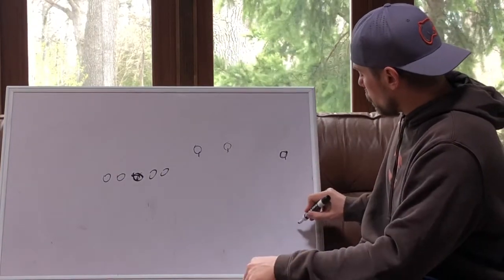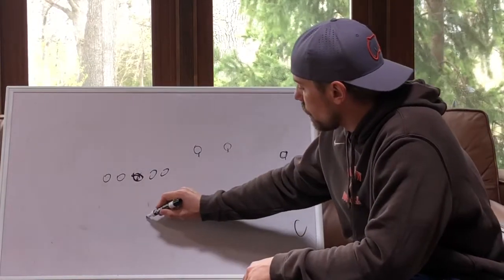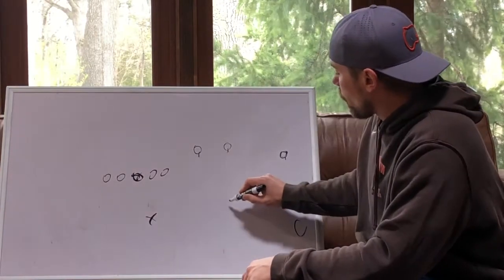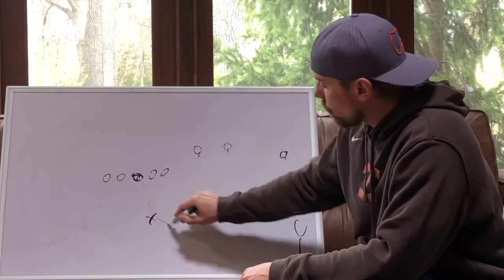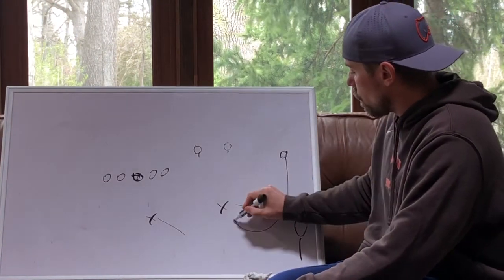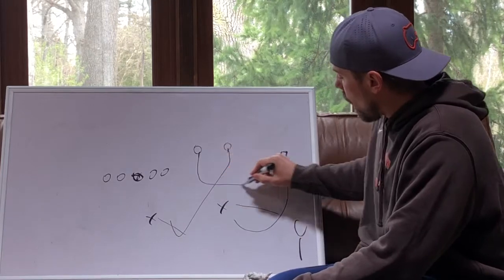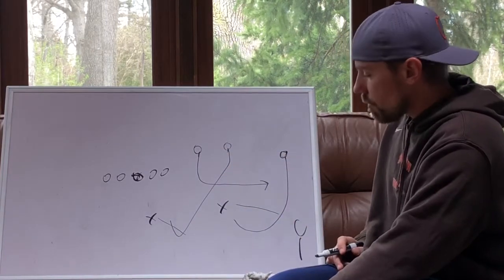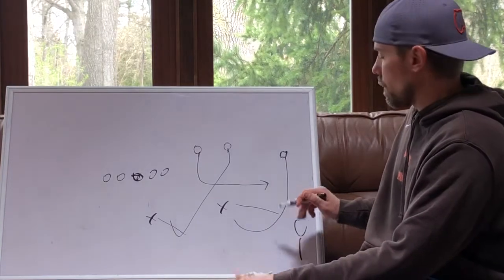And what I mean by that is, let's take that example again. We're playing cover three. So we got a hook curl backer here, we got a flat player here. So we got a deep third, we got a flat, we got a hook drop. So let's run that same concept. Curl, snag, out. Very simple, very commonly used concept. Everybody does something like this.